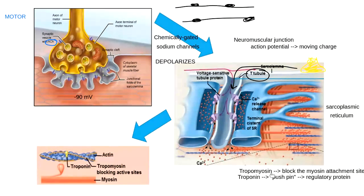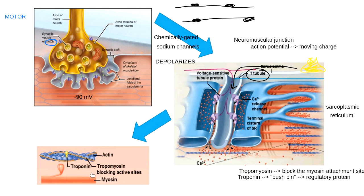Once that tropomyosin spaghetti noodle is out of the way, myosin can attach to actin. The myosin binding sites on actin that were covered are now uncovered. The cross-bridge cycle is then used to attach myosin to actin and pull on it, producing muscle contraction.